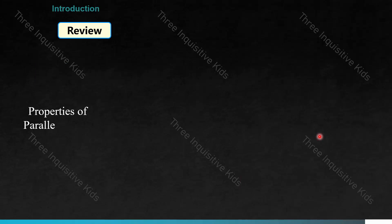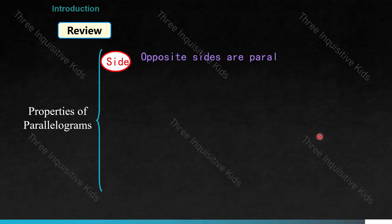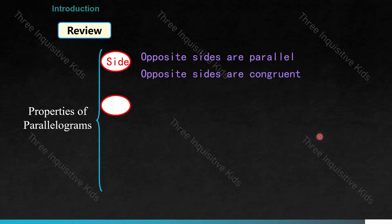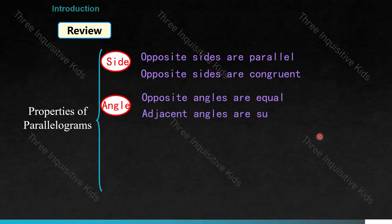Let's do some review. Here are the properties of parallelograms. For sides: opposite sides are parallel and opposite sides are congruent. For angles: opposite angles are equal and adjacent angles are supplementary. Supplementary means that two angles add up to 180 degrees, while complementary means they add up to 90 degrees.